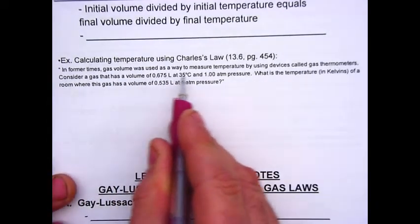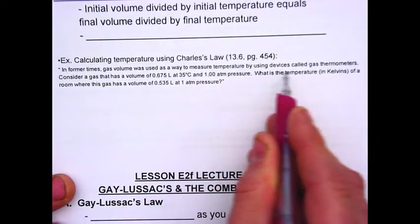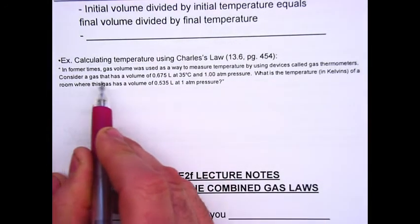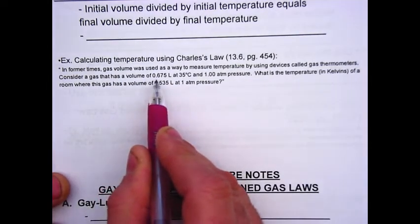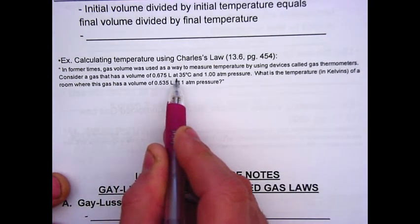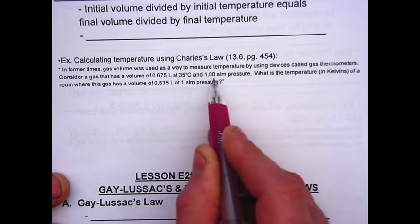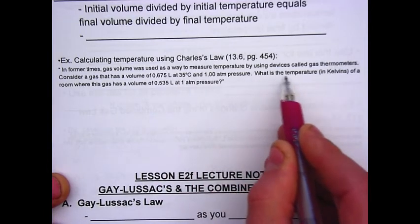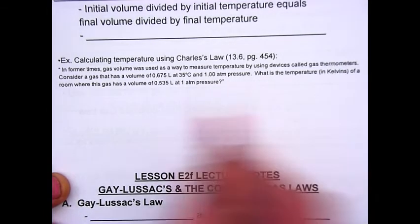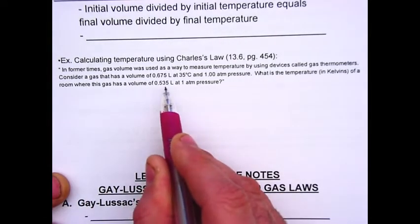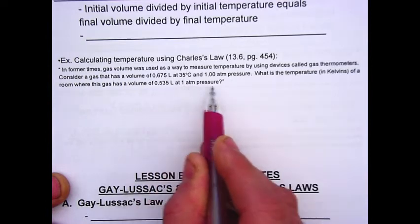Consider a gas that has a volume of 0.675 liters at 35 degrees Celsius and 1 atmosphere of pressure. What is the temperature in kelvins of a room where this gas has a volume of 0.35 liters at 1 atmosphere of pressure?